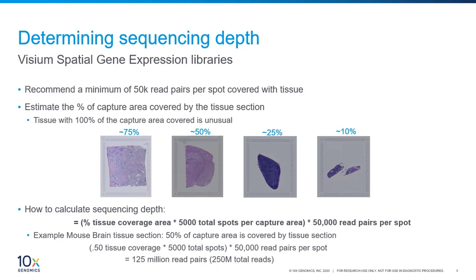Unlike our single-cell products, we cannot calculate sequencing depth based on cell input, since we do not know how many cells are present in our tissue section. Instead, we use the tissue coverage to approximate the sequencing depth. We recommend 50,000 read pairs per spot covered with tissue, and recommend that you estimate the percentage of capture area covered by the tissue section after looking at your H&E images. An example of four different tissues with varying levels of coverage is shown here.